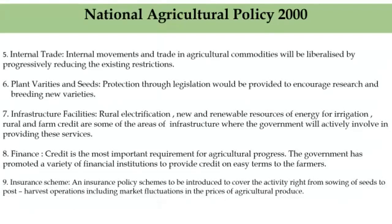The fifth feature is internal trade. Internal movements and trade in agricultural commodities will be liberalized by progressively reducing existing restrictions in whichever manner they may be, including tax. This will encourage the market to play its role in the determination of agricultural prices. The government would also enlarge the coverage of commodity futures markets to minimize wide fluctuations in commodity prices and for hedging risk.